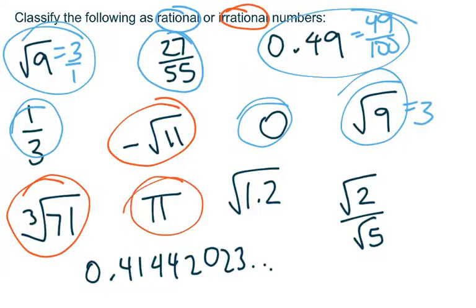Pi, we know to be an irrational number. There's no way to rewrite it as a fraction. Root 1.2, we're not going to be able to rewrite that as a fraction.